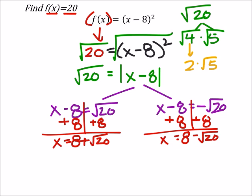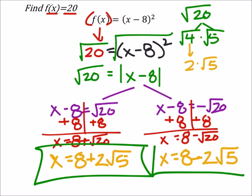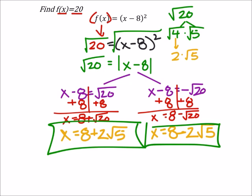And now that leaves me with x equals 8 plus 2 times the square root of 5, and x equals 8 minus 2 times the square root of 5. And this would be our completely simplified answer. So if by chance you wanted to, you could have written x equals 8 plus or minus 2 times the square root of 5.